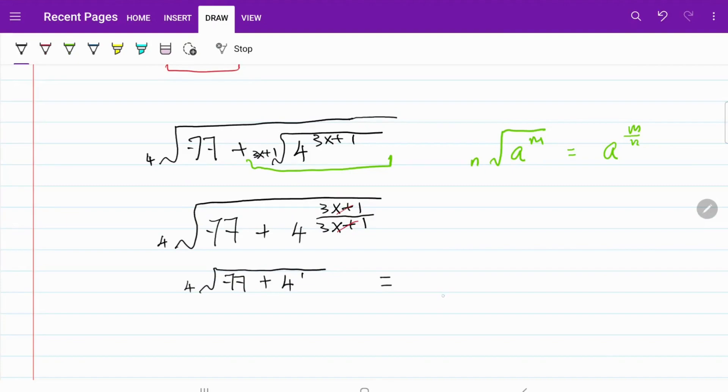This can be expressed as 81 to the fourth root, which equals 3. And that's the answer.